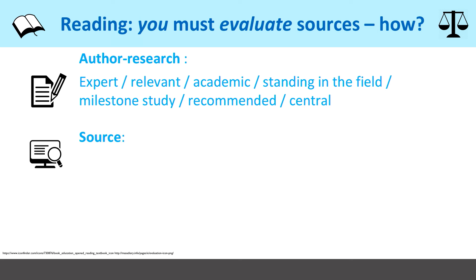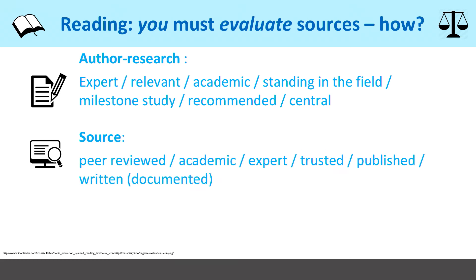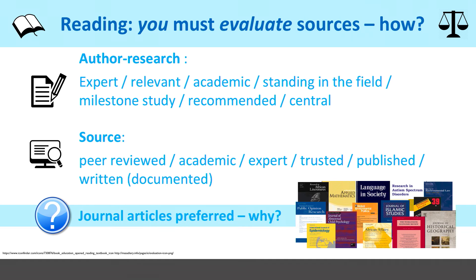The other way you can judge the type of sources you're looking at is where they come from. What we're looking for are sources which are peer reviewed, academic, expert, trusted, published and written. Journal articles are often preferred for literature review in an academic context. Why? It's because journal articles are peer reviewed, they're academic, they're written by experts, they're reviewed by peers of the people who have written them. That's why they're preferred.